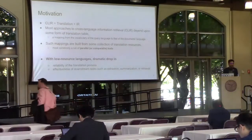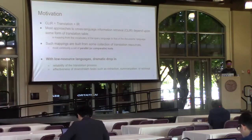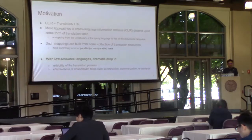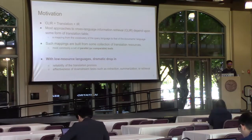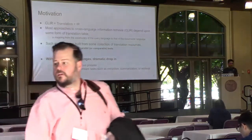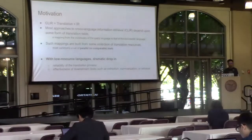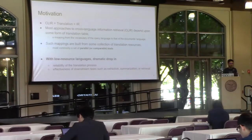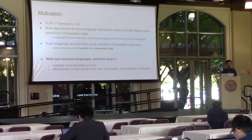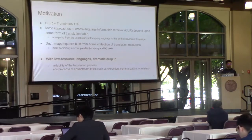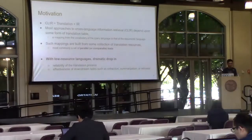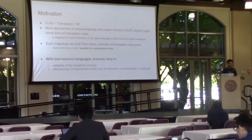For those of you who are less familiar with CLIR, both for the continuous settings: basically, it contains two components. One is the translation component, and the second is information retrieval, which determines which words should work together. Basically, the language of your query is different than the language of the retrieval corpus.